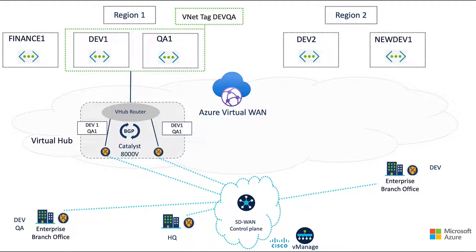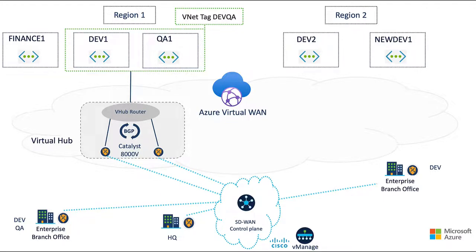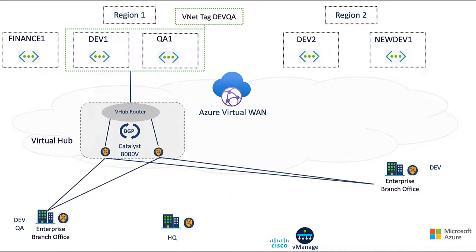This is where our separate secure SD-WAN control plane really shines. Besides allowing for massive scaling and tighter key security, we can use connectivity intent and centralized policies to control access and direct traffic flows. The tagged VNet routes are sent to our fabric but only advertised to our select branches. Likewise, our branches will send their routes back to Azure, forming data plane connectivity and allowing our branches access to our VNet workloads and vice versa.